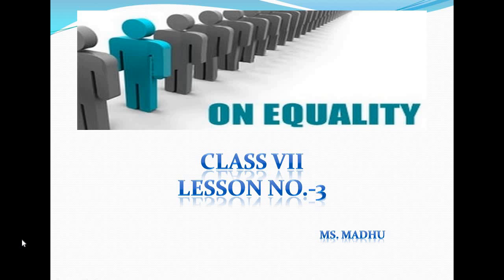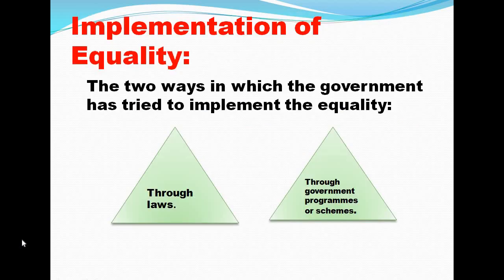Today we shall discuss about the implementation — what the government tried to implement regarding equality. There are two ways in which the government has tried to implement equality: the first one is through laws, and the second one is through government programs and schemes. There are several laws in India that protect every person's right to be treated equally, and the government has also set up several schemes to improve the lives of communities and individuals.